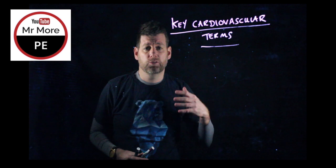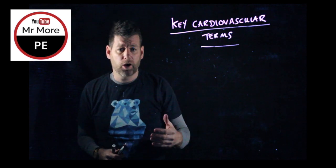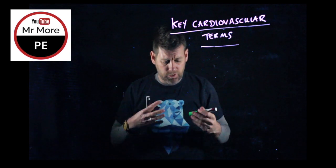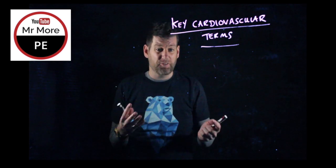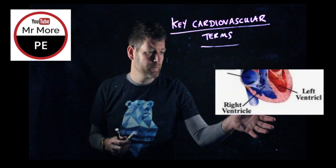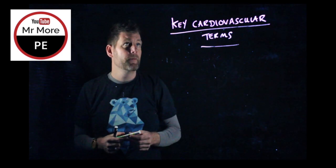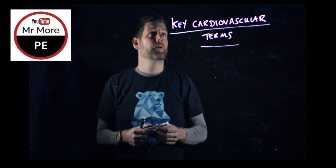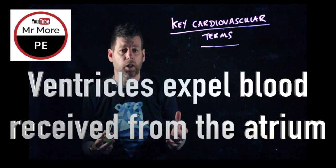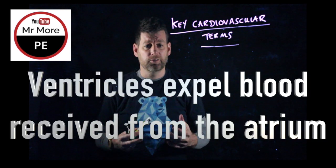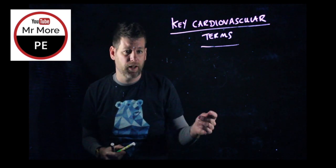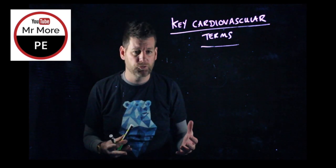Next up, we're going to look at a definition for cardiac output. But before we do that, it's probably worth knowing a little bit about the ventricles — what they are. So here's a ventricle. Ventricles expel blood received from the atrium — that's what they do. That's kind of A-level, but it's useful to know.